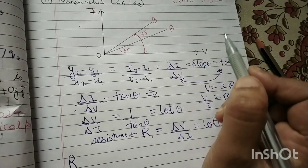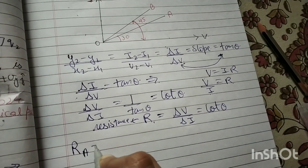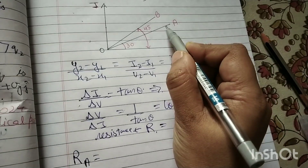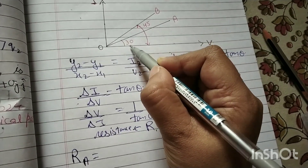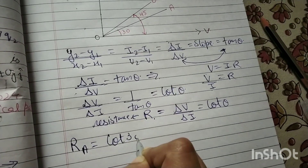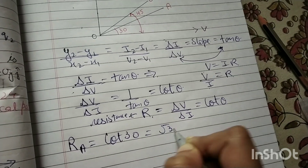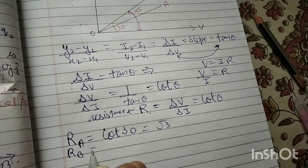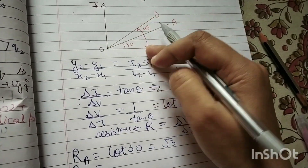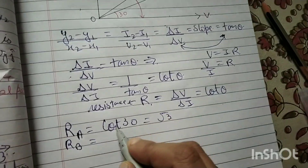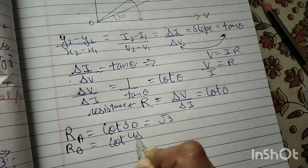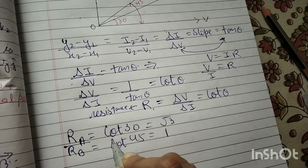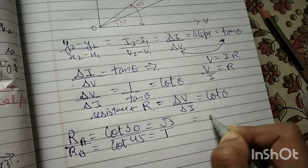For graph A, R equals cot theta. Metal A corresponds to an angle of 30 degrees, so cot 30° equals root 3. Similarly, resistance of metal B corresponds to an angle of 45 degrees, so cot 45° equals 1. Dividing them, the ratio RA to RB equals root 3 to 1. This is the first part of the answer.